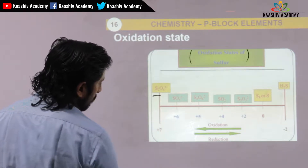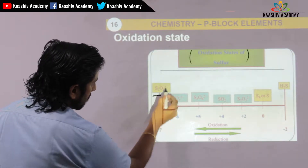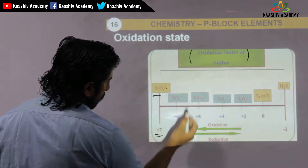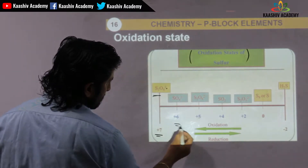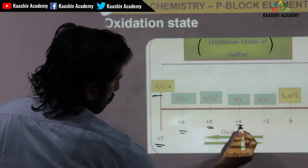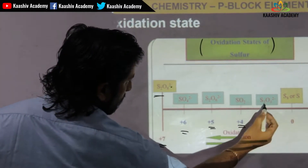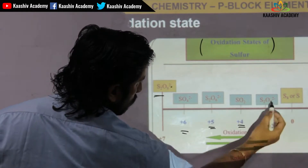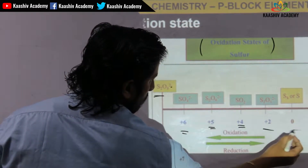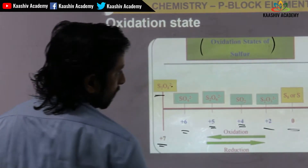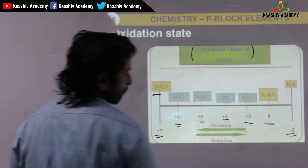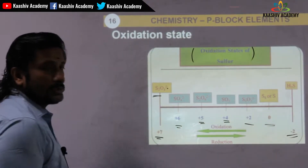Oxidation states of sulfur: S2O8 is 2 minus has plus 7; SO4 2 minus has plus 6; SO3 2 minus is plus 5; SO3 is plus 4; S2O3 2 minus gives plus 2. S8 and S give zero oxidation state, and H2S gives minus 2.